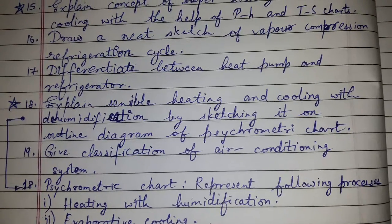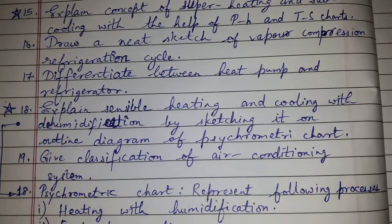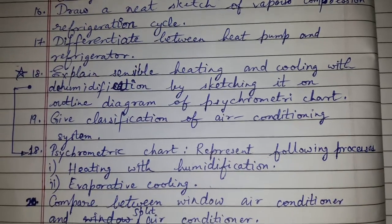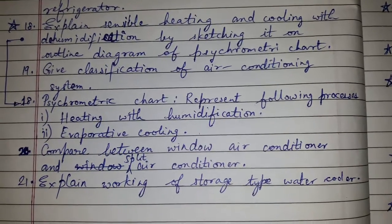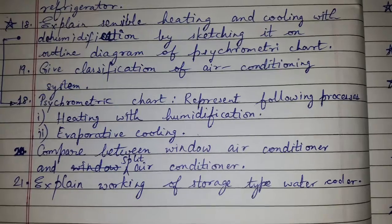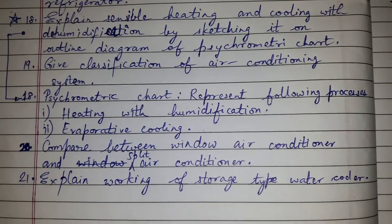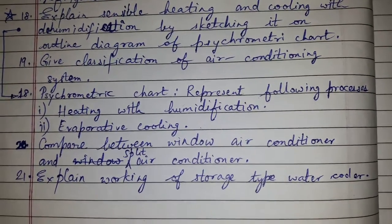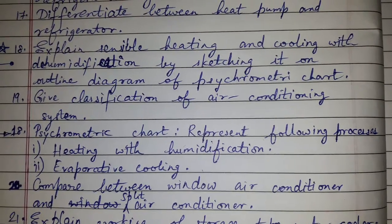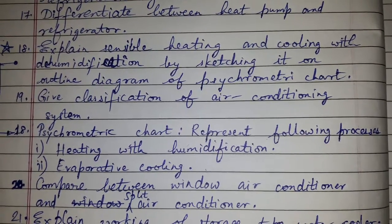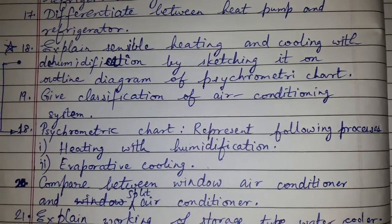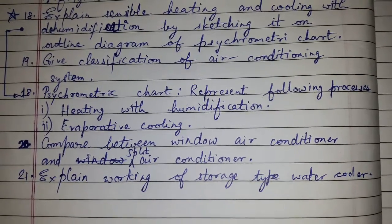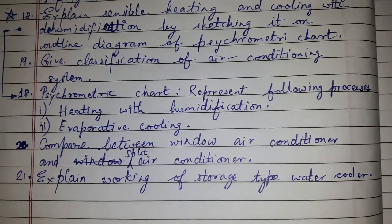Another question on the psychometric chart asks you to represent the following processes: heating with humidification and evaporative cooling. Also, give the classification of air conditioning systems, and compare window air conditioning with split air conditioners.